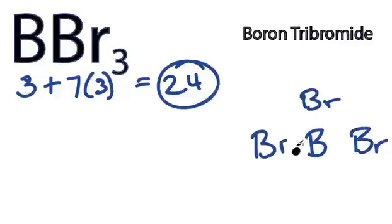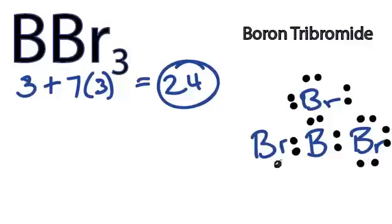And we have 24 electrons. We'll start by forming a chemical bond between each of the atoms there. That's 6. And then on the outside, 8, 10, 12, 14, 16, 18, 20, 22, 24.